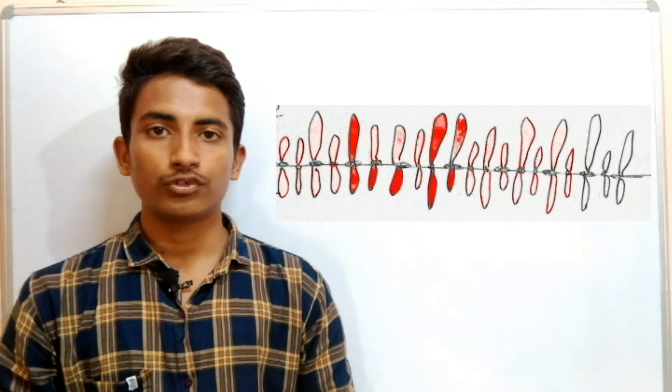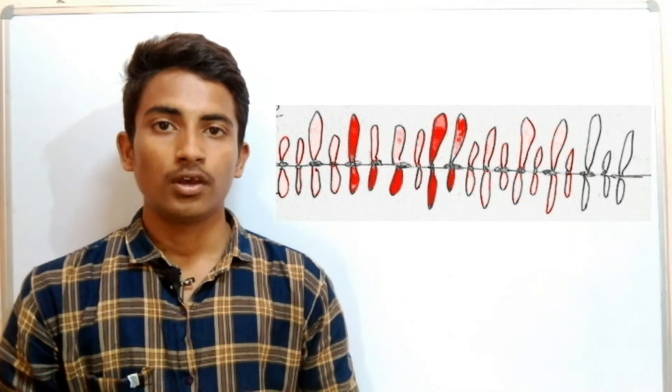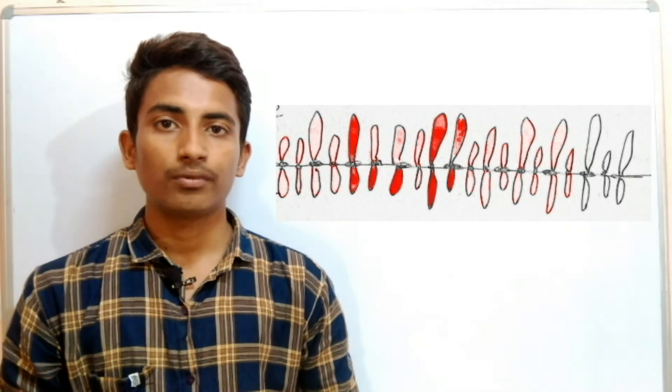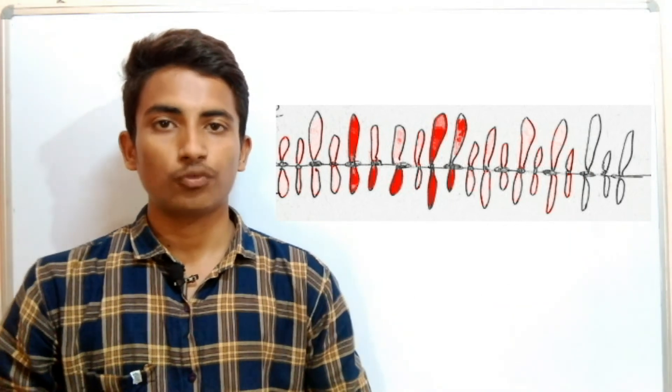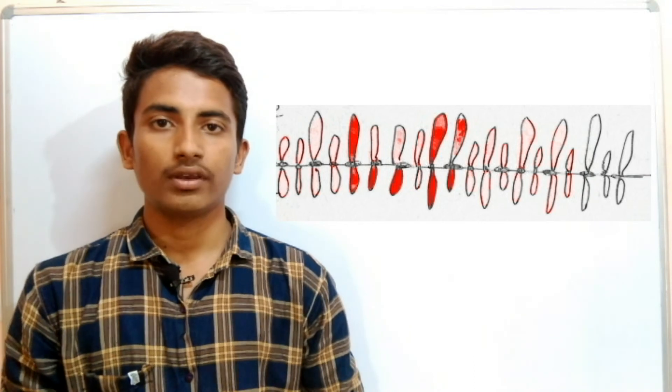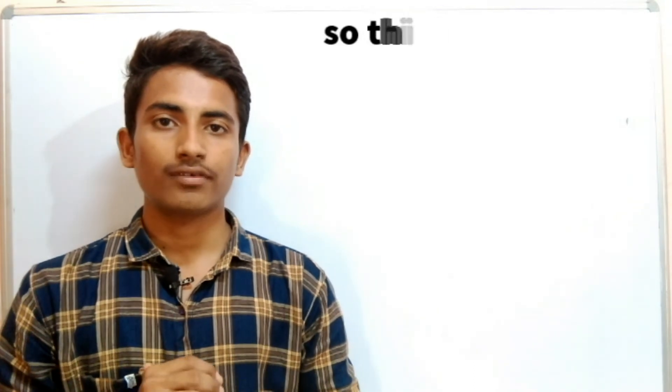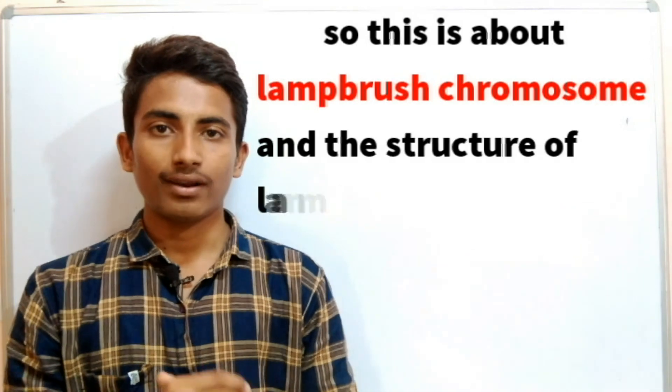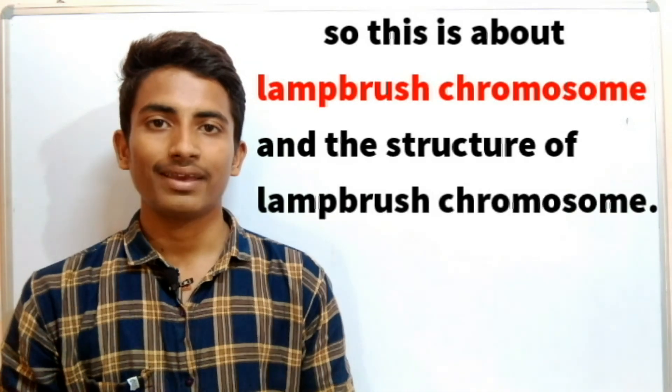Third and last is the loop. From each chromomere arises a pair of lateral loops. Loops are of two types: typical loop and spatial loop. This is about the structure of the lamp brush chromosome. Thanks for watching BioStudy with Nikhil YouTube channel. Please like and subscribe to our channel. Thank you so much.